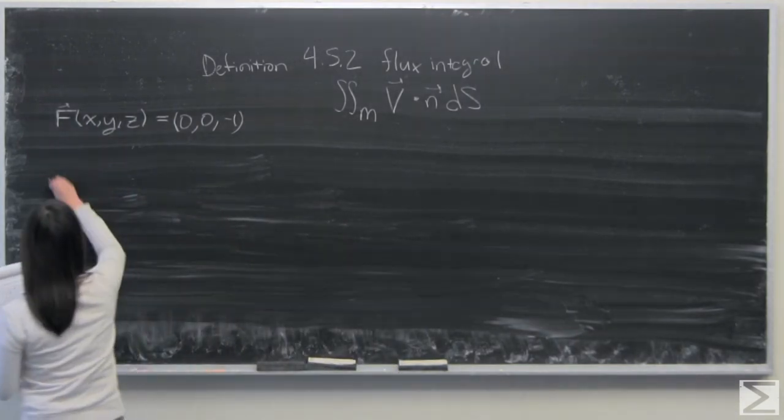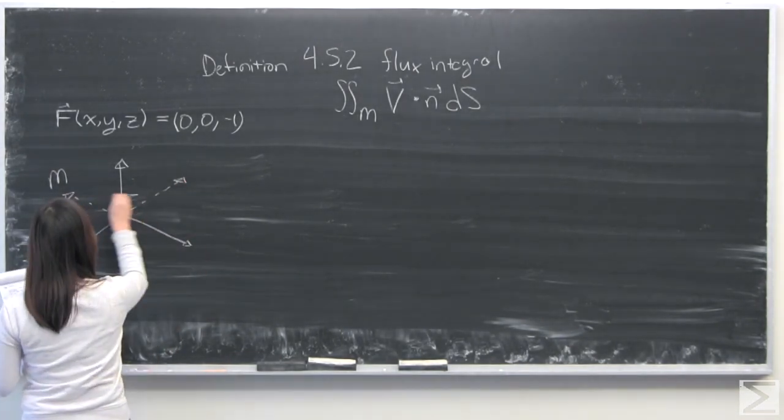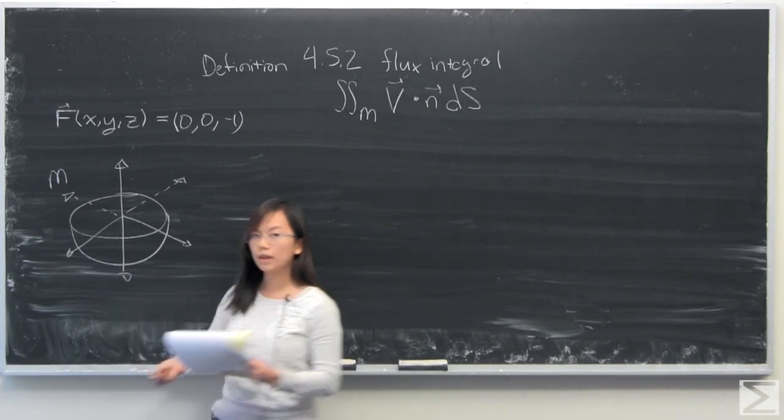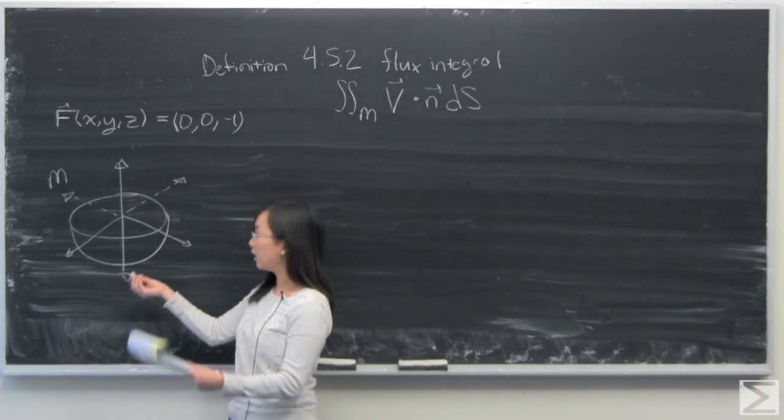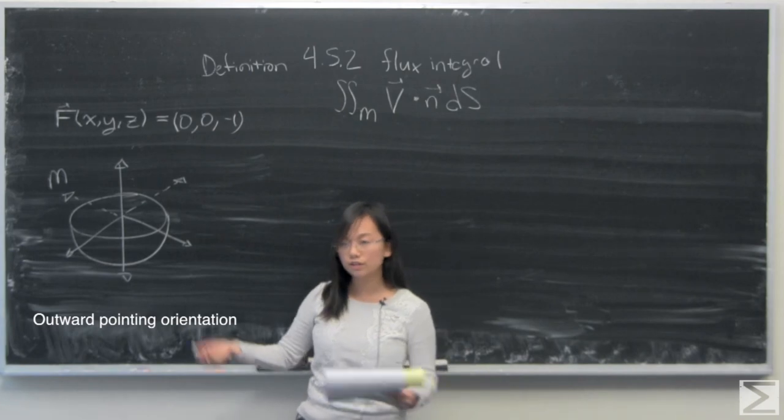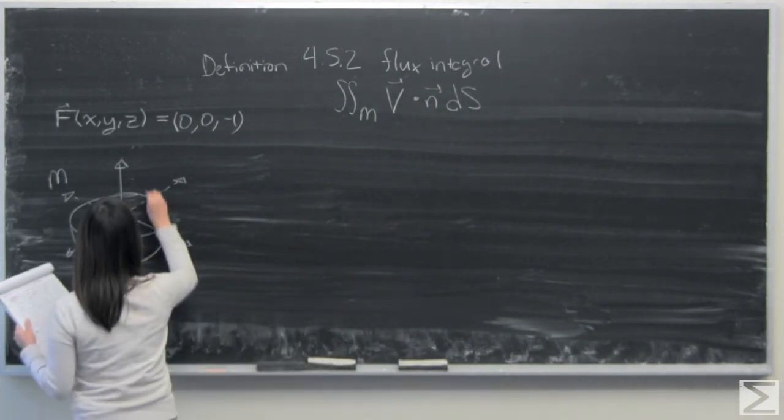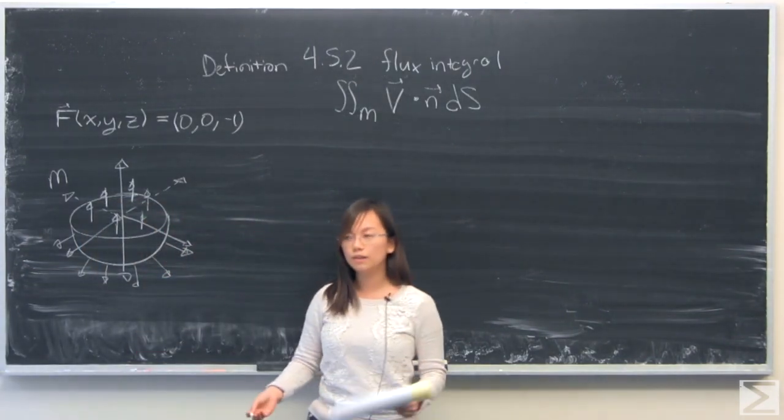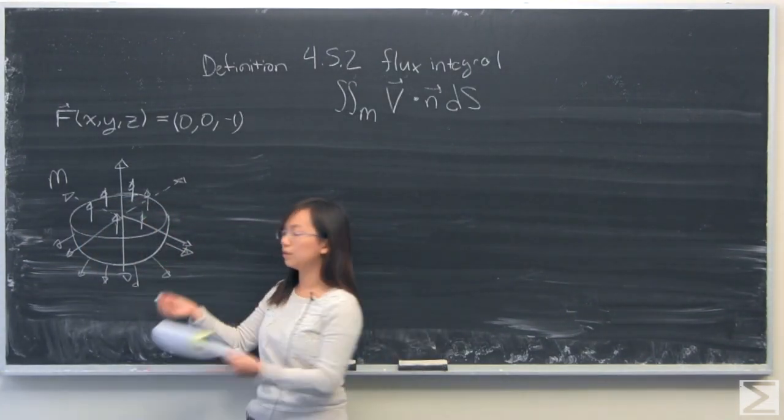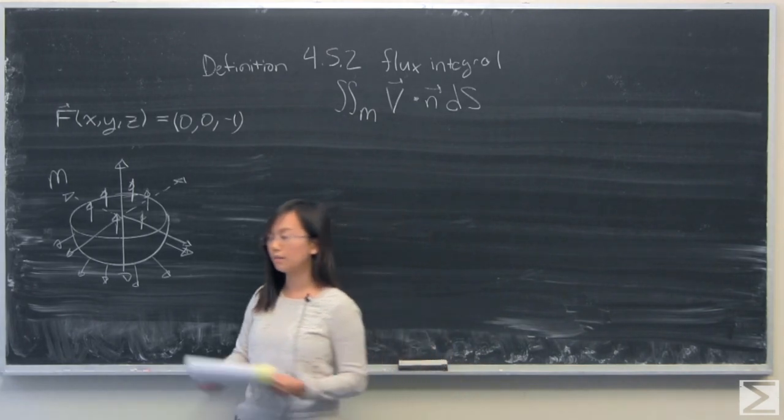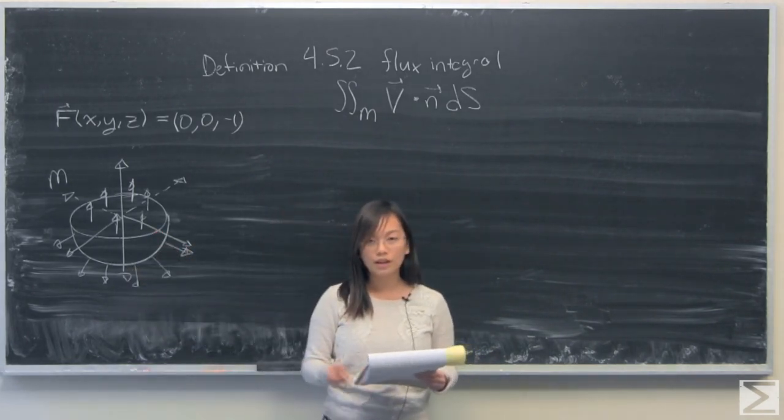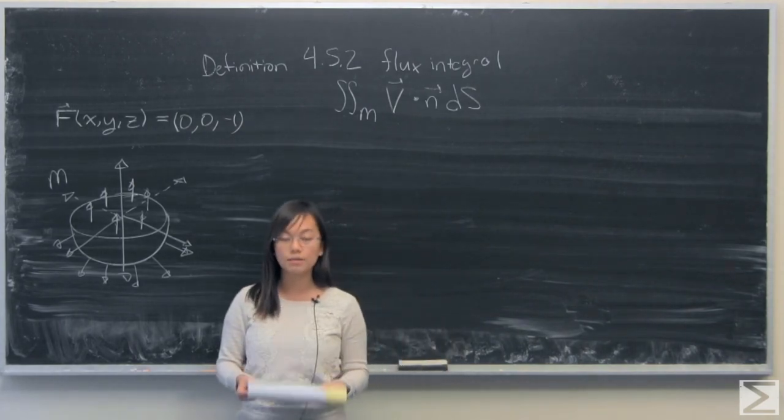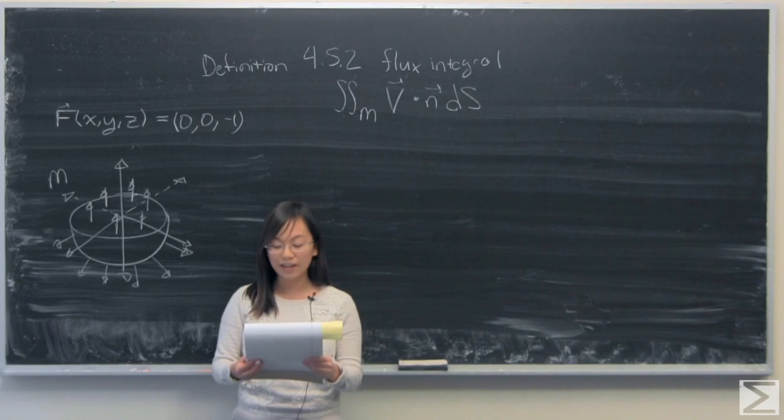So I'm going to start by drawing that out. Here I have drawn that surface M and we are going to be using the standard outward pointing normal vectors. For this question, I'm going to divide this surface into two parts: a disk and a hemisphere. I'm going to calculate the flux through both pieces separately and then add them at the end to get my answer.